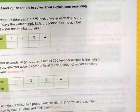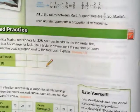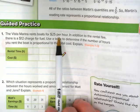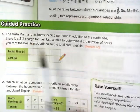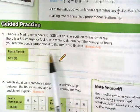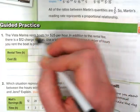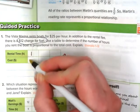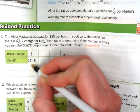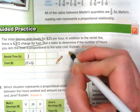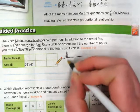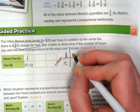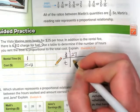I'm going to do the guided practice with you first. You're going to want a calculator nearby. The Vista Marina rents boats for $25 per hour. In addition to the rental fees, there's a $12 charge for fuel. Use a table to determine if the number of hours you rent the boat is proportional to the total cost. This $12 charge for fuel tells us we might have a little bit of a problem here. So if I rent the boat for one hour, it's $25 plus the $12, which is $27. Let's rewrite it over here with money over the time. Our total cost for one hour plus the $12 fuel fee is $27 for one hour.